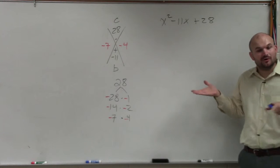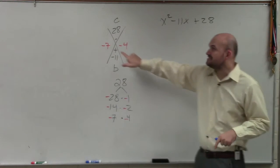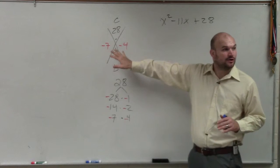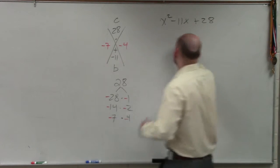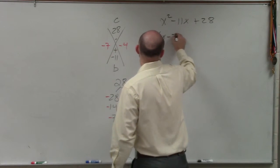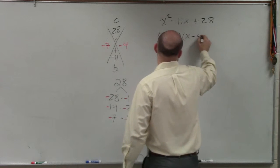And if you guys notice on that first example that I did, these values are actually in your factored form. And they're in the factored form of x minus 7 times x minus 4.